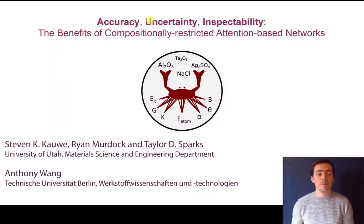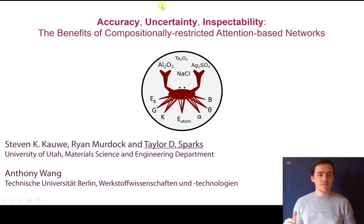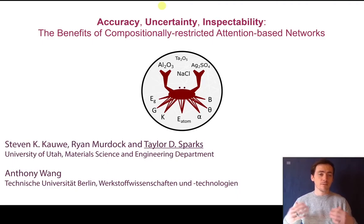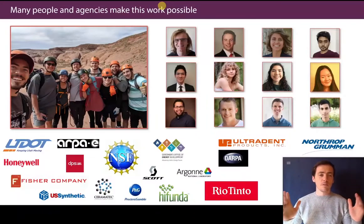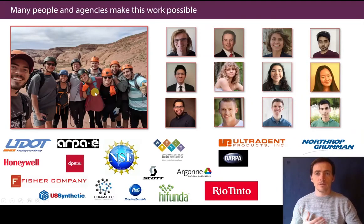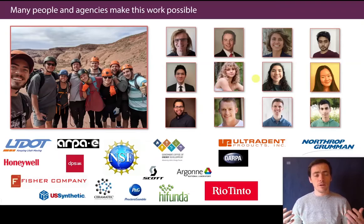Hi, everyone. My name is Taylor Sparks, and I'm the Associate Chair of Materials Science and Engineering at the University of Utah. I'm so excited to speak to you today. My talk is entitled Accuracy, Uncertainty, and Inspectability: the Benefits of a Compositionally Restricted Attention-Based Network, which we call CrabNet. This work is from myself and my group members Stephen Kawe, Ryan Murdoch, as well as a collaborator from TU Berlin, Anthony Wang. Let me recognize the people and funding that made this possible, including contributions from other great group members and a career grant through the NSF in the DMR SSMC program.